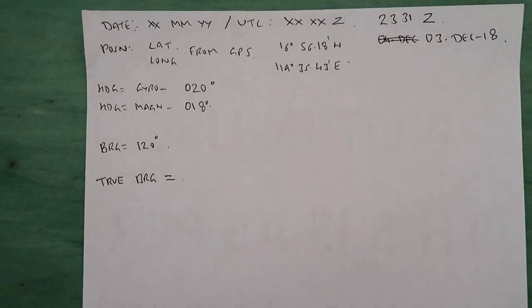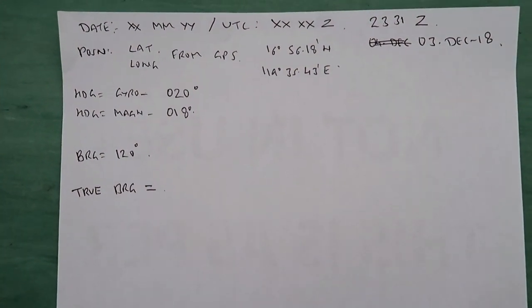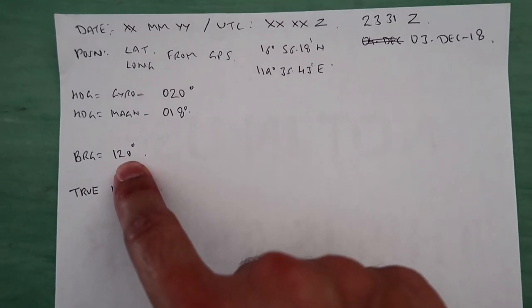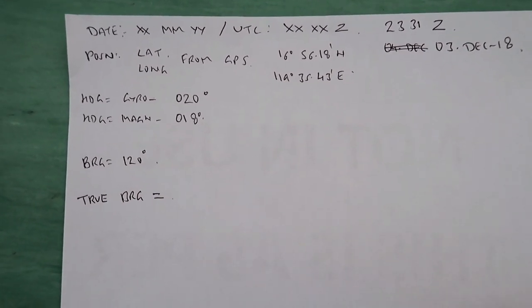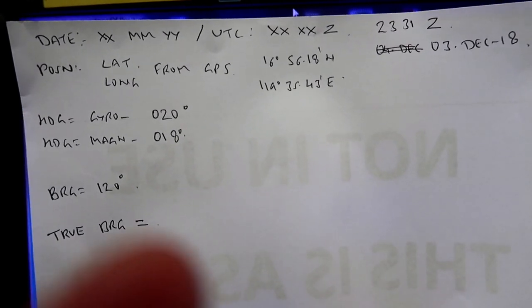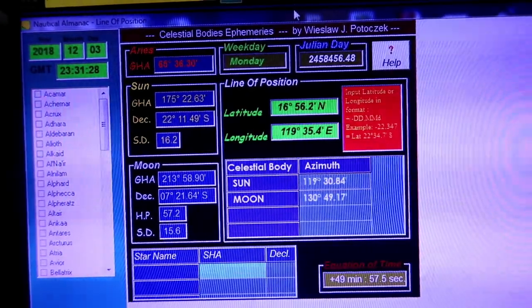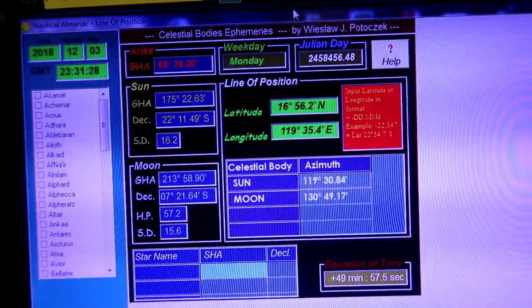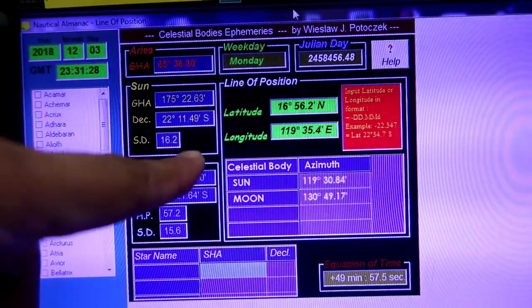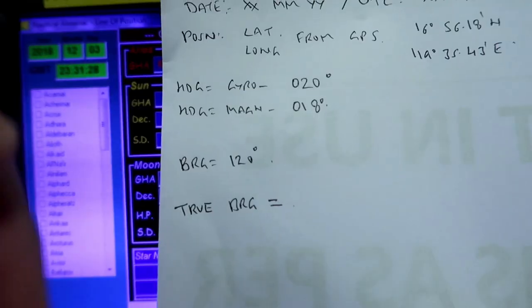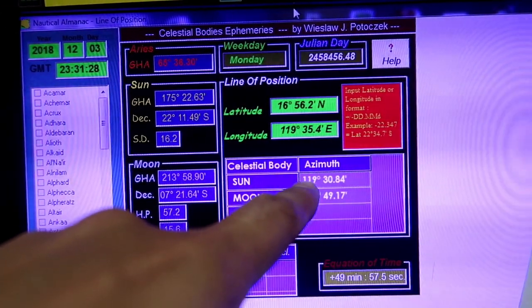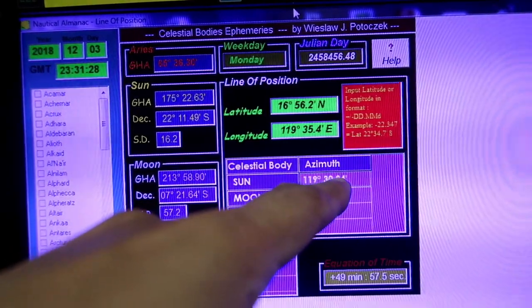After the bearing, you are going to need date, UTC time, vessel's position, gyro heading, magnetic heading, and obviously the bearing which you have checked just now on the azimuth circle. To get the true bearing we are going to use the software. This is the data we have noted down. We have transferred the same information onto this software, Nautical Almanac Line of Position. Once you feed in your position and update your UTC date and time, you automatically get the azimuth. Our bearing was 120 degrees on the gyro for the sun, and the true bearing we have calculated is 119 degrees 30.8 minutes.